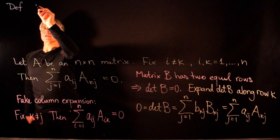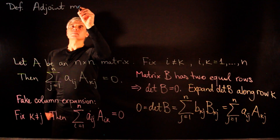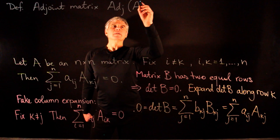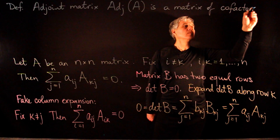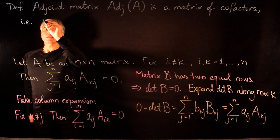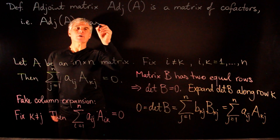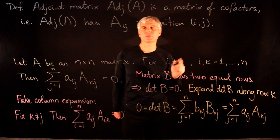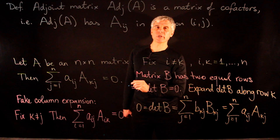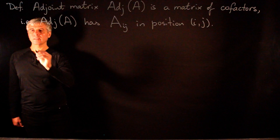Now we define the adjoint matrix. This is a matrix of cofactors: the adjoint matrix of A has cofactor A_ij in position (i,j), meaning row i, column j. So we compute all possible cofactors for the given square matrix and fill a new matrix with them.